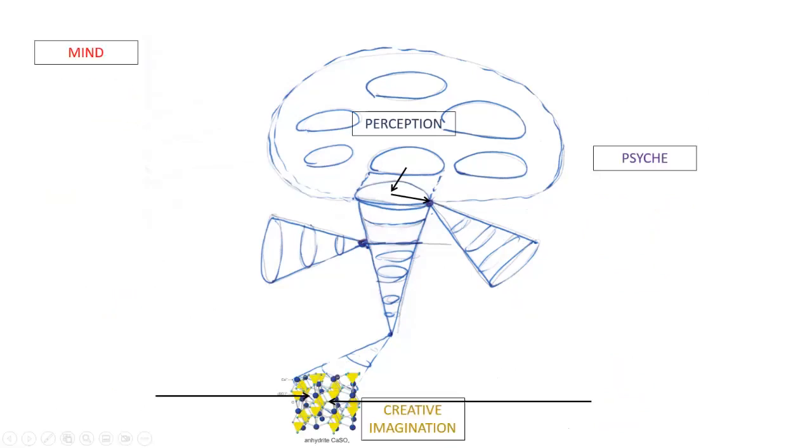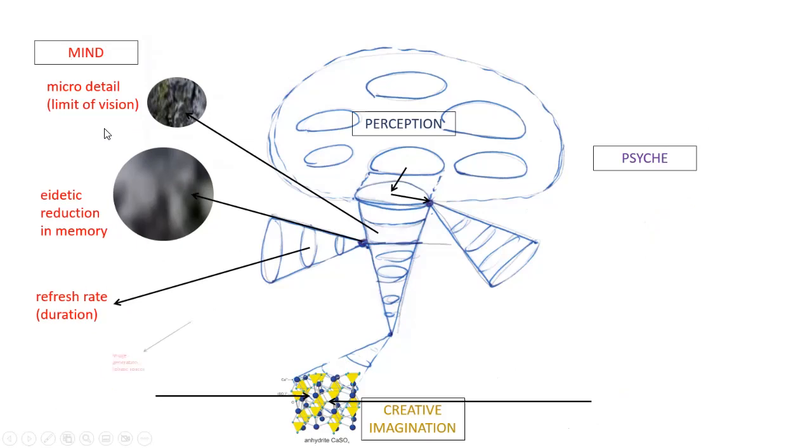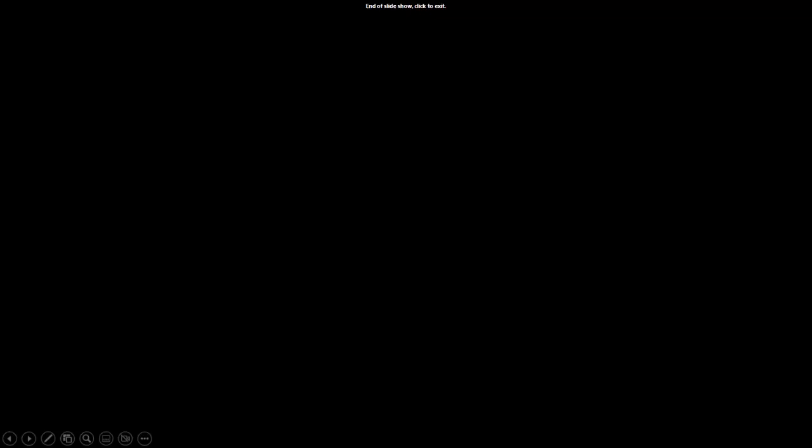Just recapping: these are see out densities except the last one. These are see in densities, and these are feel in densities. We can call this side mind, the visual density is perception, and the feel in is psyche. Once we start to reify the meaning or have image space generation, we're using more creative imagination higher up the cognitive stack, the cognitive architectures. Now we're into semantic meaning.